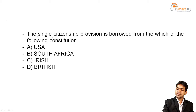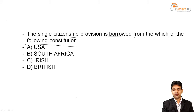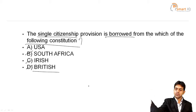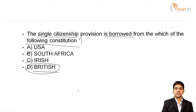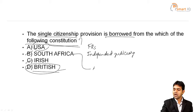Next question: The provision of single citizenship is borrowed from which of the following constitutions? Option A: USA. Option B: South Africa. Option C: Irish Constitution. Option D: British Constitution. The answer is the British Constitution. From the US Constitution, India borrowed the principle of fundamental rights and independent judiciary.